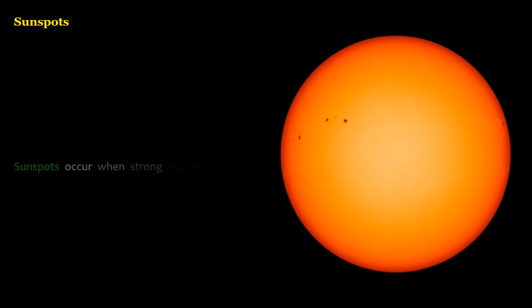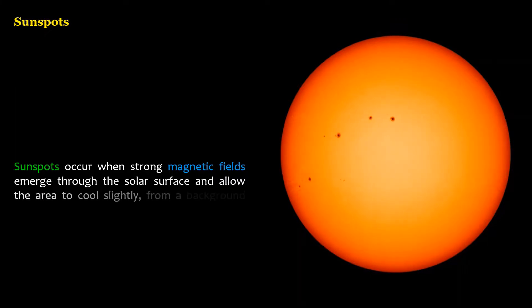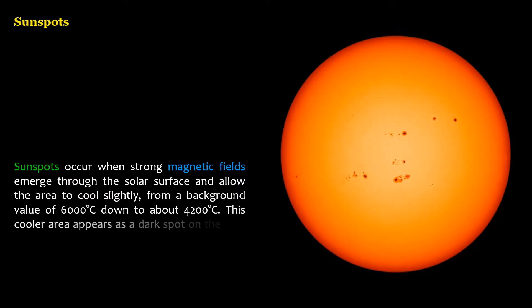Sunspots occur when strong magnetic fields emerge through the solar surface and allow the area to cool slightly, from a background value of 6000 degrees Celsius down to about 4200 degrees Celsius. This cooler area appears as a dark spot on the sun.